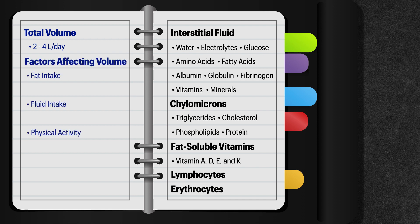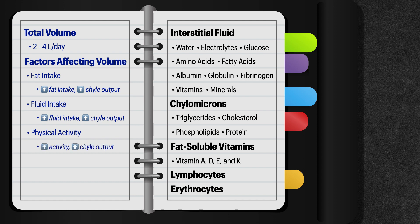This volume changes based on factors like fat intake, fluid intake, and physical activity. A high fat intake leads to more chyle output than a low fat intake or fasting. A high fluid intake leads to more chyle output than a low fluid intake or fasting. And physical activity leads to more chyle output than bed rest.